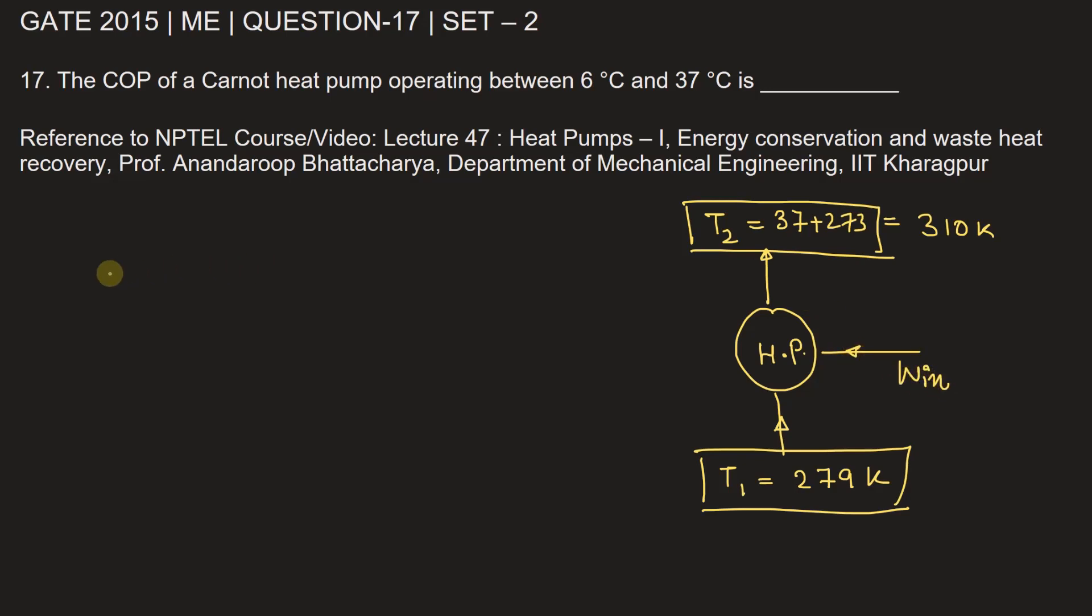Now the coefficient of performance COP is given by QH, the heat rejected. So QH is this and this is QL. For the case of heat pump we can also write TH, temperature of higher body, divided by temperature of higher body minus temperature of lower body.